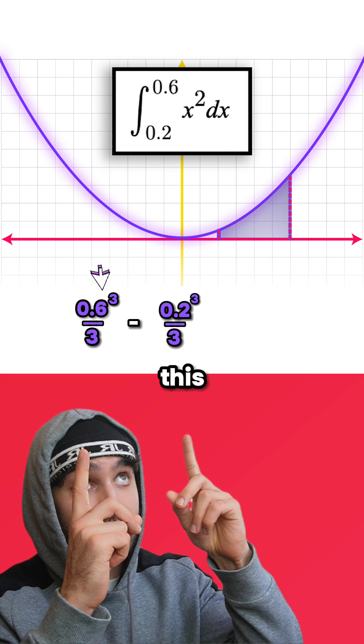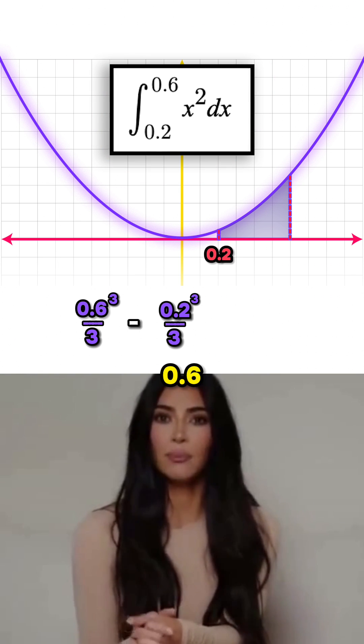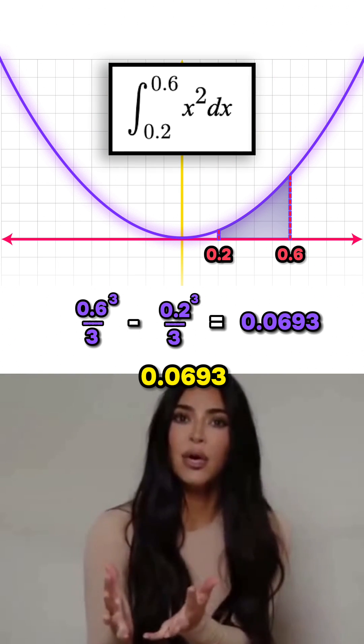So the answer to the question is just this? Yes. So the area under x squared between 0.2 and 0.6 comes out as 0.0693.